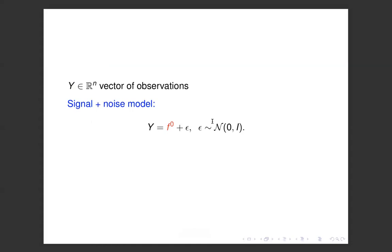I do this all for the simplest possible model — the signal plus noise model — where you have a vector y of observations, n-dimensional. This vector has an unknown mean, which I denote by the red vector f0. For simplicity, it's a Gaussian random vector with unknown mean and variance, IID with independent components, variance one.